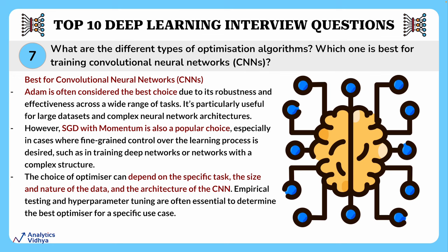For training CNNs, Adam is often considered the best choice due to its robustness and effectiveness across a wide range of tasks. However, SGD with momentum is also a popular choice, especially when fine-grained control over the learning process is desired, such as in deep networks or networks with complex structure. The choice of optimizer depends on the specific task, the size and nature of the data, and the CNN architecture. Empirical testing and hyperparameter tuning are often essential.